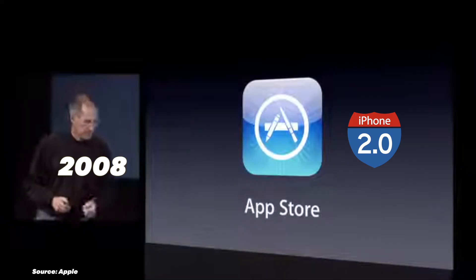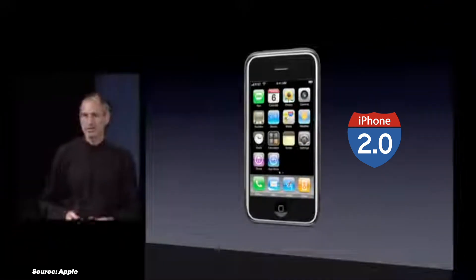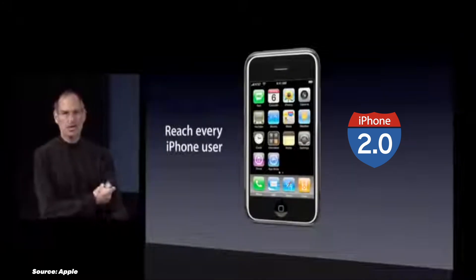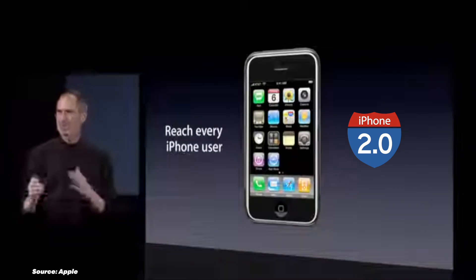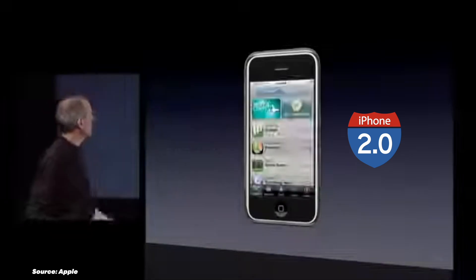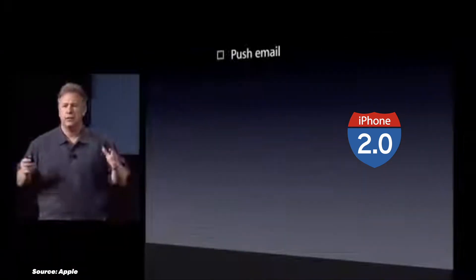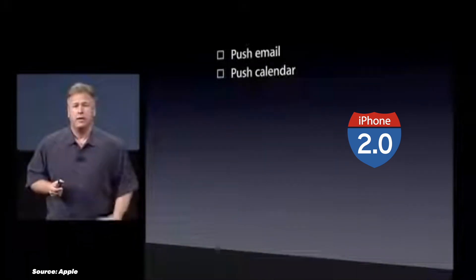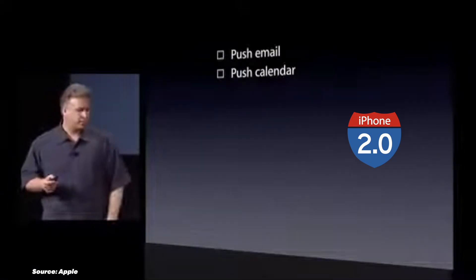In 2008, iPhone OS 2 introduced the App Store, a groundbreaking marketplace that unlocked the potential for third-party applications. This huge update revolutionized the iPhone, transforming it into a versatile and entertaining device. The App Store opened an infinite array of possibilities at your fingertips. Enhancements to stability and performance further solidified the iPhone's reliability. It also introduced push email, allowing for real-time email notifications. Contact search made finding people in your address book easier. iPhone OS 2 was the moment when iPhone really started to flex its muscles as a platform.